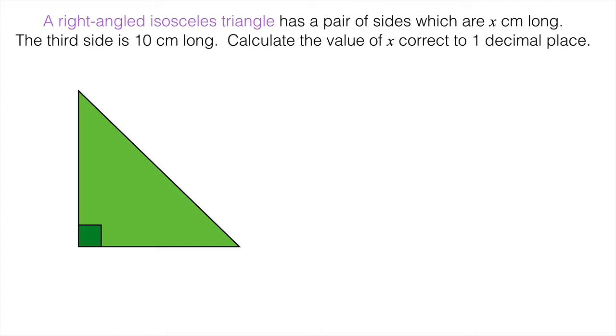Now those two sides are x centimeters long. The third side, well that must be the hypotenuse, and that is 10 centimeters long. And we have to calculate the value of x correct to one decimal place.